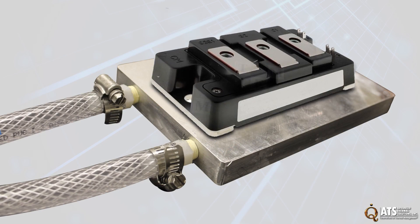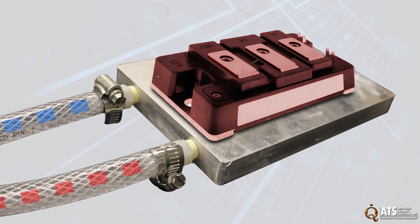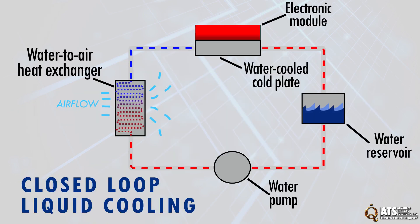Cold plates are placed on a component that requires cooling, absorbing and dissipating the heat from the component to the liquid that is then cycled through the system.